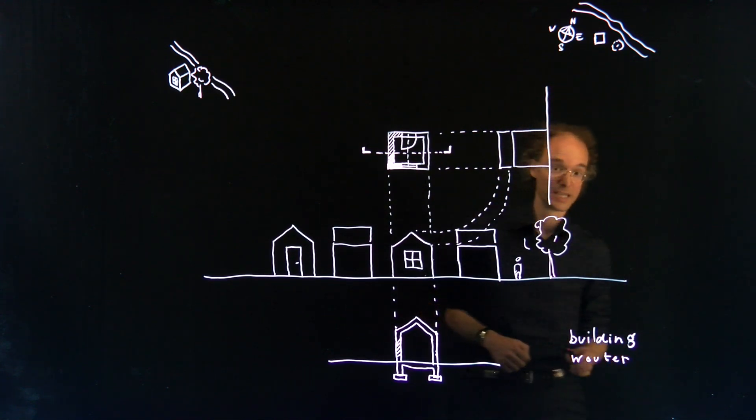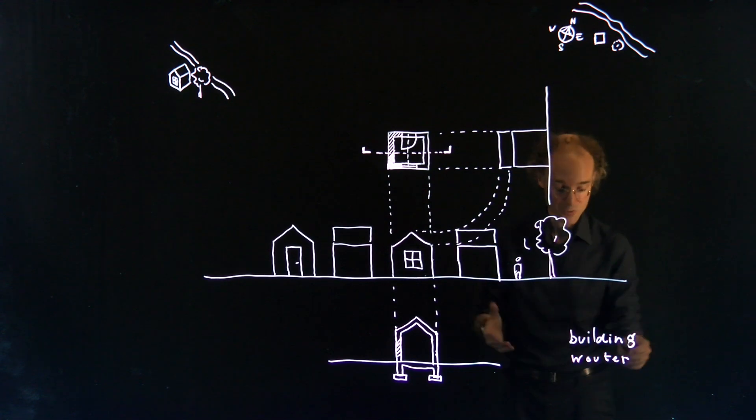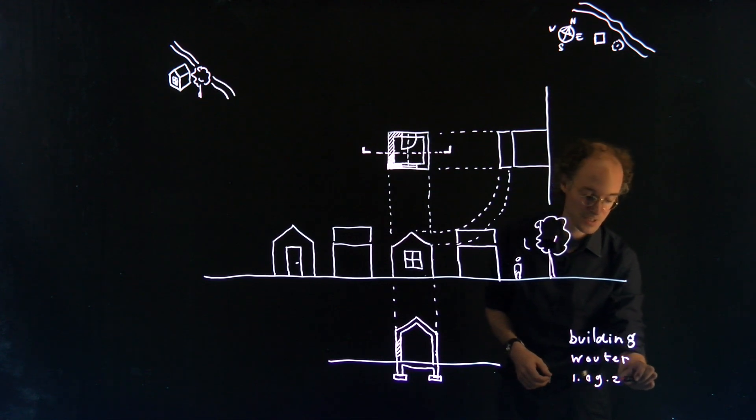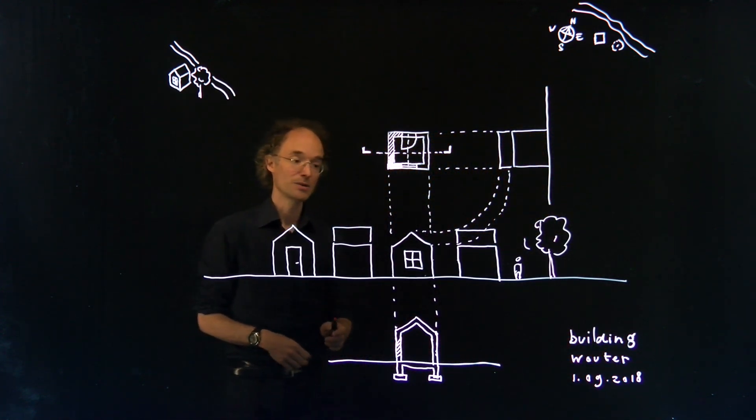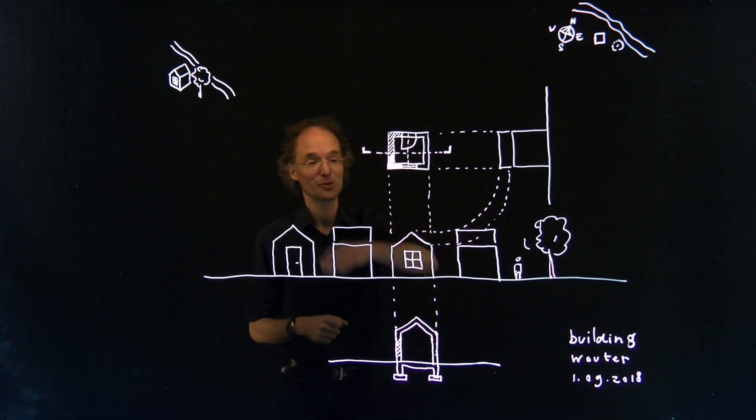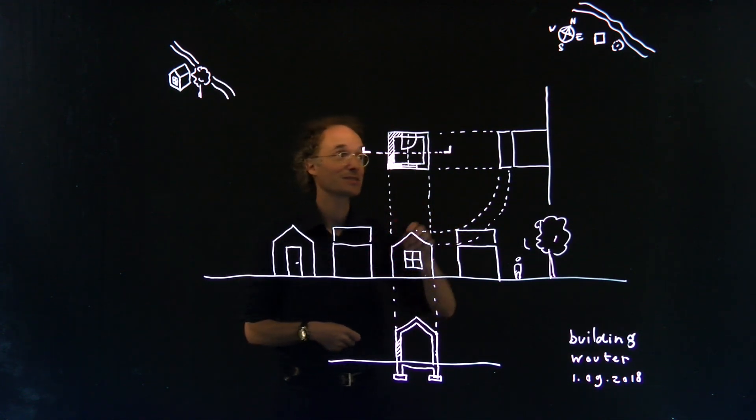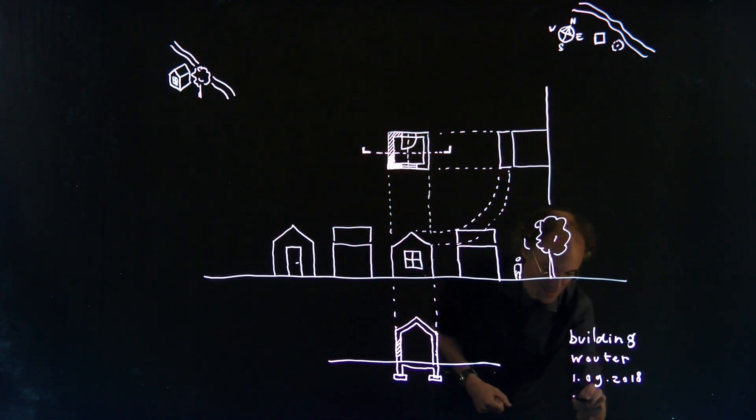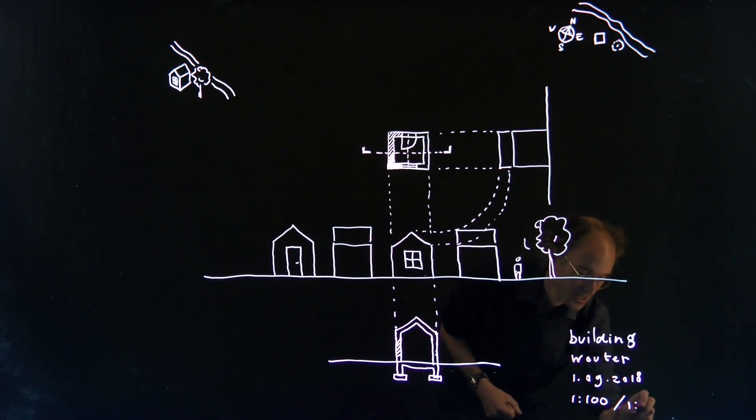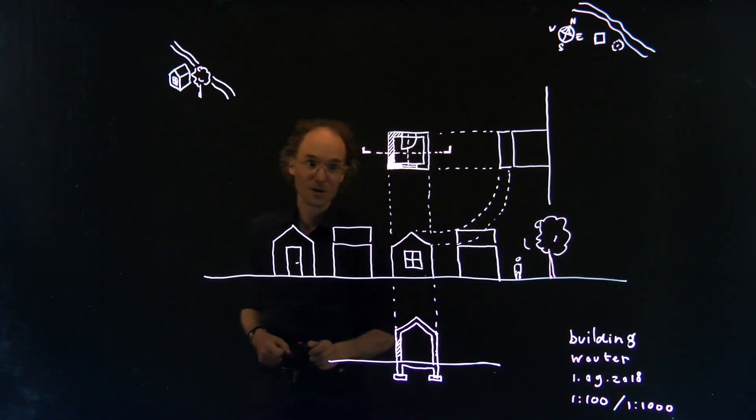You have to include a date, because later you want to know when this drawing has been made. For example, this date. And then you have to include a scale. In this case, the scale of plans and elevations and sections is another scale than the scale of the situation. So maybe in this case, I need two scales. It could be that the plans are 1 to 100, and the situation is 1 to 1000, for example.